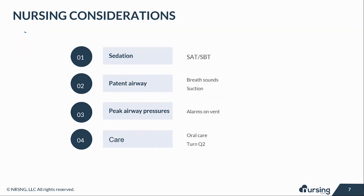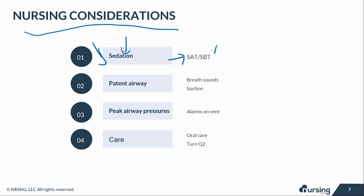Some nursing considerations for a ventilated patient: number one is sedation. Not all patients need to be sedated, but most do — especially if they're biting the ET tube, bucking the vent, or trying to pull out their ET tube, in which case you'd start propofol or Precedex. You may also have orders for SATs and SBTs — spontaneous awakening trials where you wean off sedation to check neurological status, and spontaneous breathing trials where you assess whether the patient is breathing on their own and ready to be weaned off the vent.